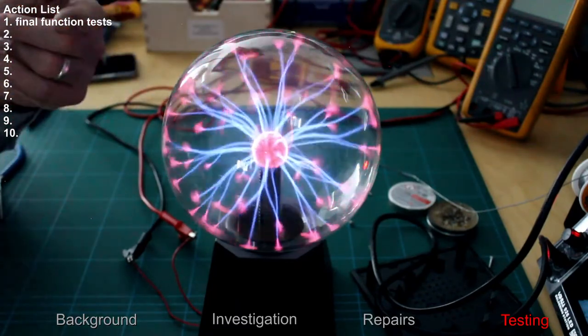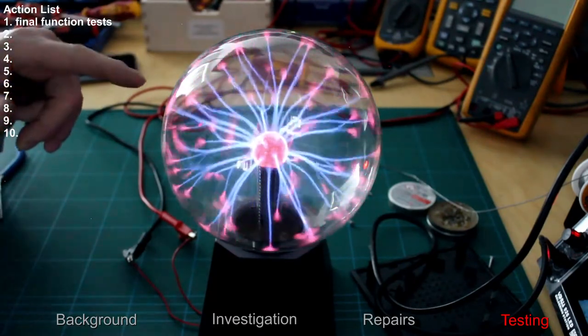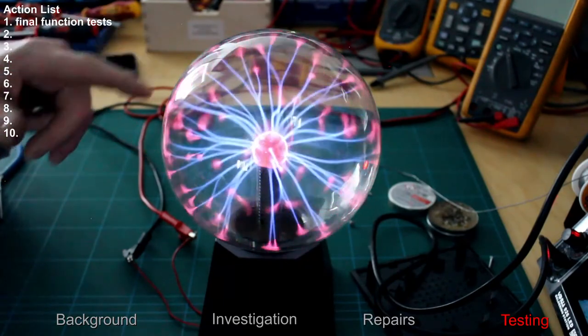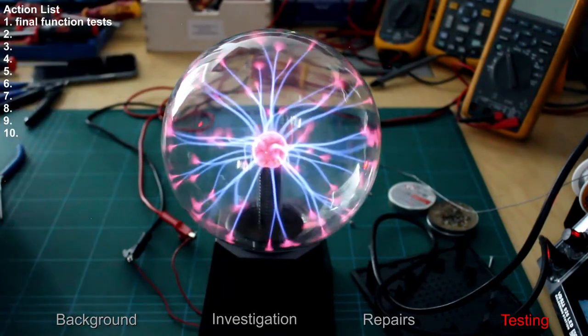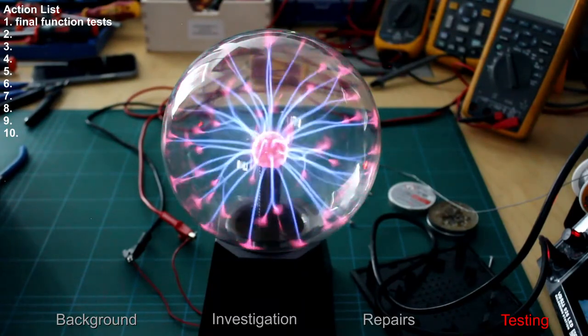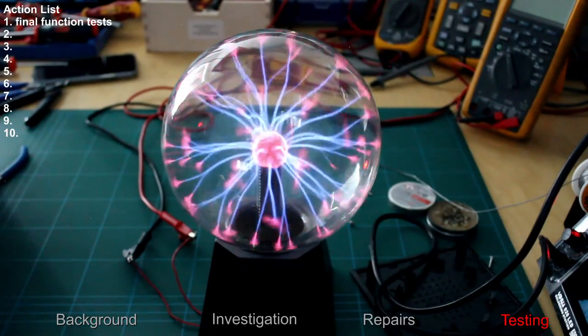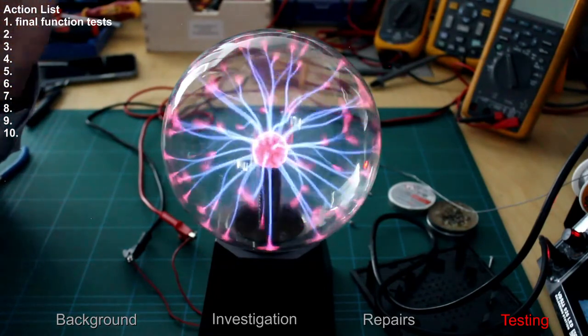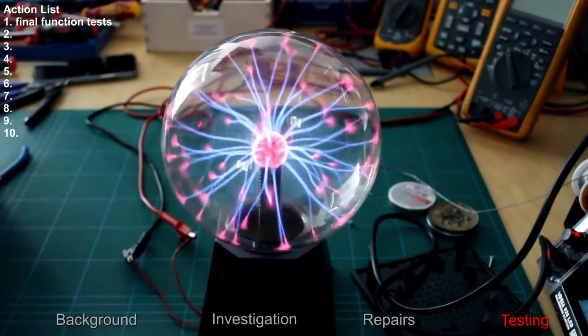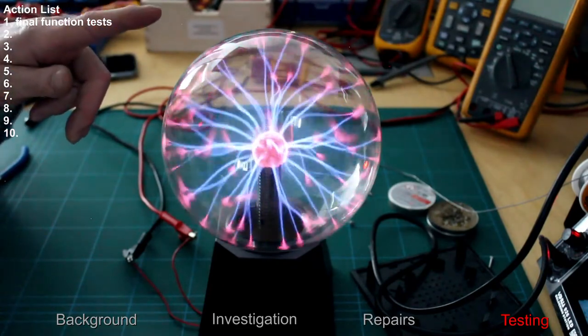From the centre element across through the noble gases inside the tube, which are argon, neon, etc. A mixture of, depending on what colour effect you want. When I approach it, I'm a ground potential, effectively, which is different to what the glass is. So it will see me as a lower resistance conduction path. And it will want to send as much current through me as possible.